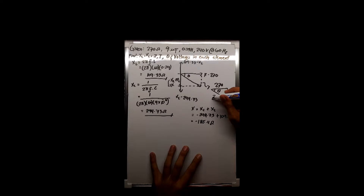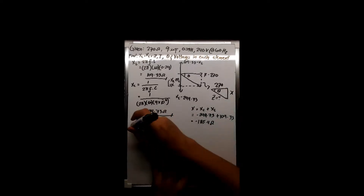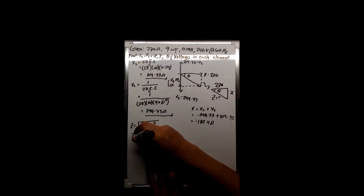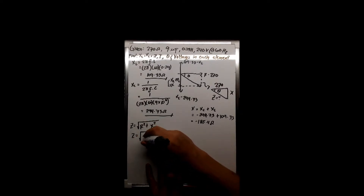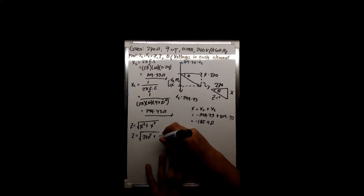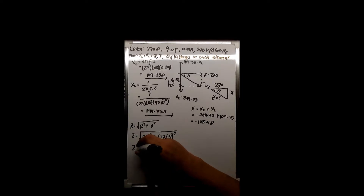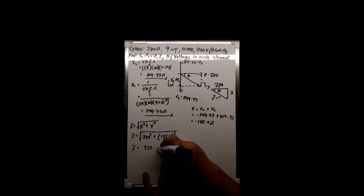By the Pythagorean theorem we can get the impedance. Z equals the square root of R squared plus X squared — so the square root of 270 squared plus negative 185.4 squared — giving us an impedance of 327.53 ohms.